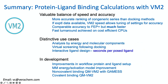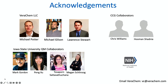To summarize: we think we have a valuable balance of speed and accuracy, with more accurate ranking of congeneric series than docking. If experimental data is available, VM2's speed allows tuning of settings for accuracy. We have comparable accuracy in some cases to FEP+, but much faster, achieved on cost-efficient CPUs. We have distinctive use cases including analysis of energy by molecular components. With a bit more speed-up, we could do virtual screening following docking and maybe even interactive ligand design. In development: improvements to workflow and ligand setup, improvements to MM energy and solvation model, and the QM work.